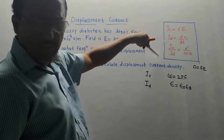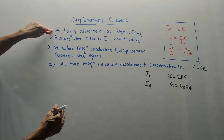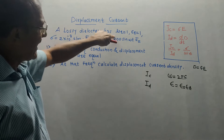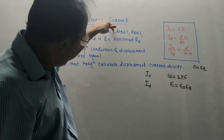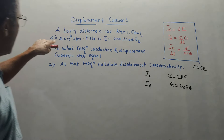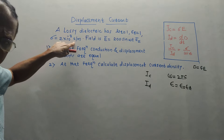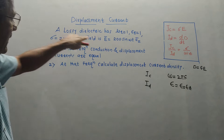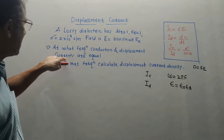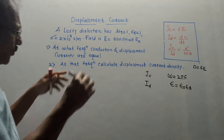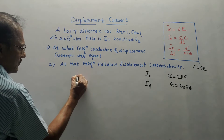These three formulae are sufficient to solve the numericals on displacement current. The problem states: a lossy dielectric has mu_r = 1, epsilon_r = 1. Mu_r is relative permeability and epsilon_r is relative permittivity. Sigma, the conductivity, is given as 2 × 10⁻⁸ siemens per meter. An equation of E-bar is given. We need to find at what frequency the conduction and displacement currents are equal, meaning JC equals JD.